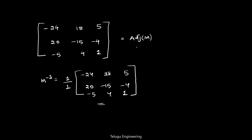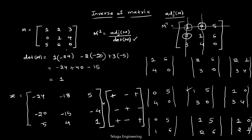Let's recap the process. First we found the determinant of M. Second, to find the adjoint of M, we took the transpose of the original matrix, then found the determinant of each minor sub-matrix for every element, and formed matrix X from those determinants.